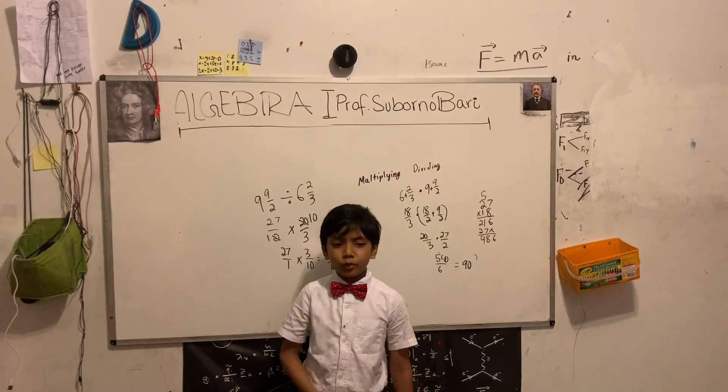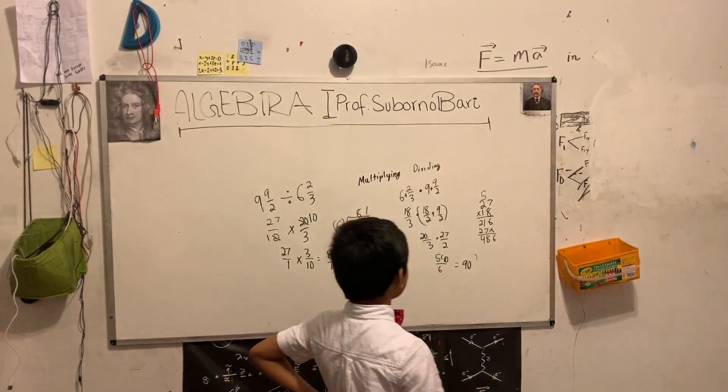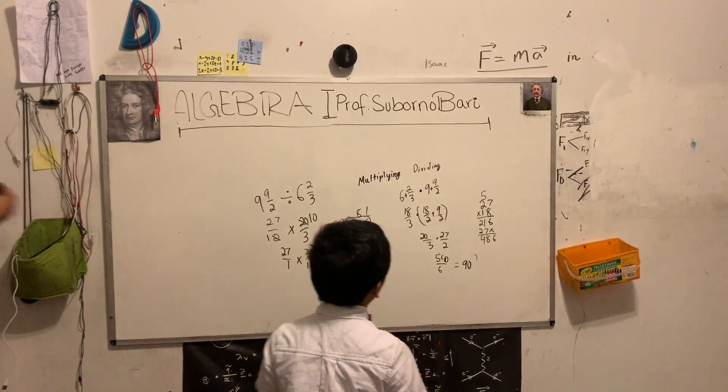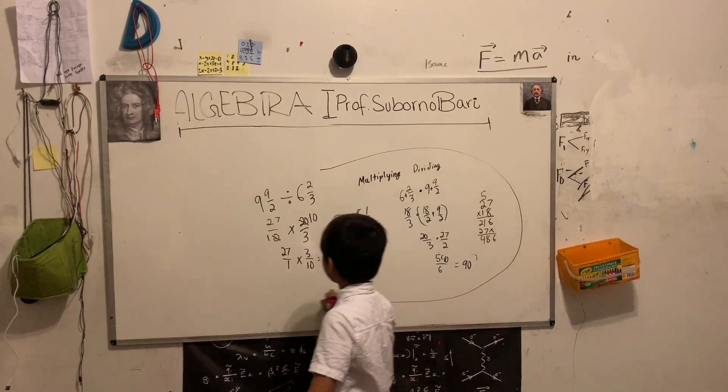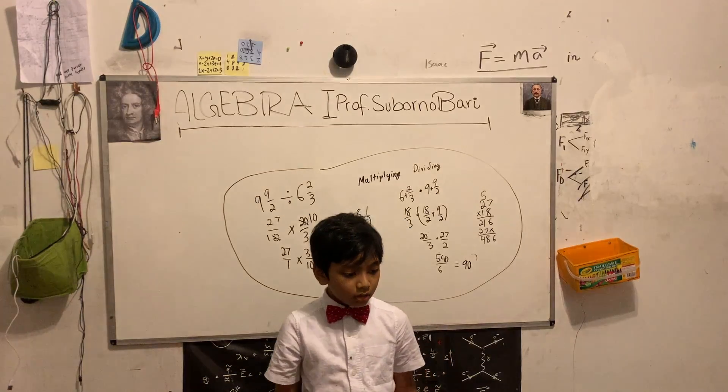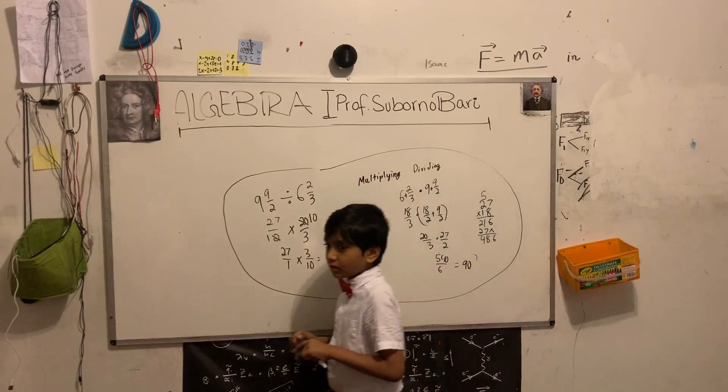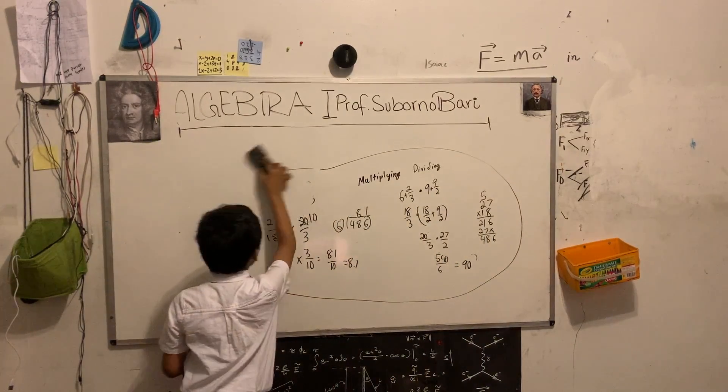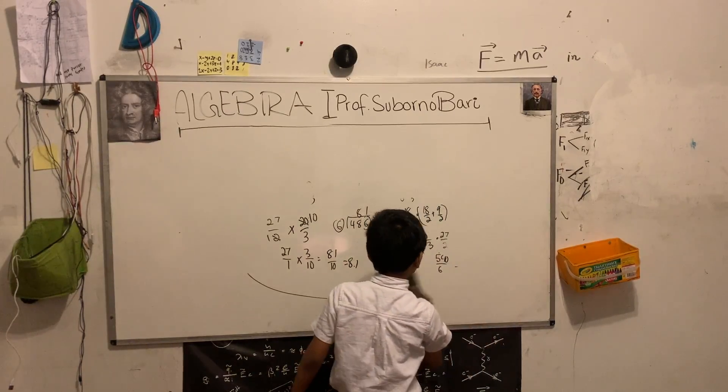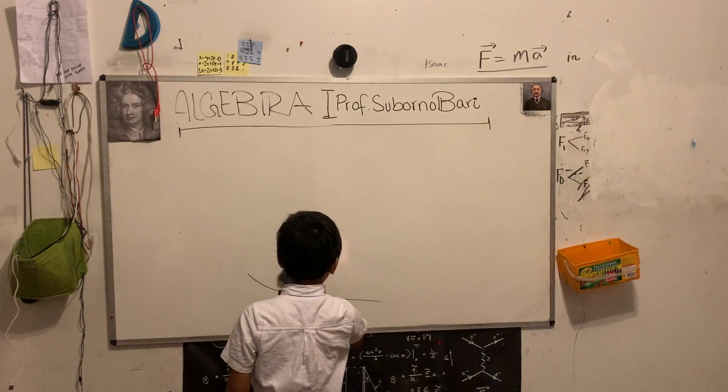But, what does 8.1 mean? Well, that brings us to today's new subject of decimals. Now, decimals are going to be a very vital part of math, and they also allow us to represent fractions easily. Here, we have to go through a whole hassle of mixed fractions and fractions to multiply and divide them. But with decimals, it just means 1, 2, 3, just like normal numbers. So, how do we use decimals? Alright.